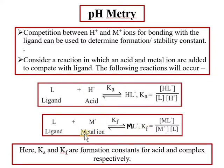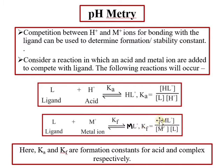Here, there are two competing reactions for the ligand: H plus ions and metal ions M plus. The products formed are acid and metal complex. Using these two formation constants together, if we know the concentration of ML+, M+, and the ligand, we can calculate the formation constant.